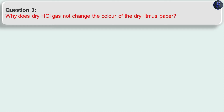Question three: why does dry HCl gas not change the color of dry litmus paper? This was discussed in activity 2.9. In activity 2.9 we saw that when dry blue litmus paper is brought near dry HCl gas, its color does not change; but when wet blue litmus paper is brought near dry HCl gas, the color turns red. If you haven't watched activity 2.9, click the I button.